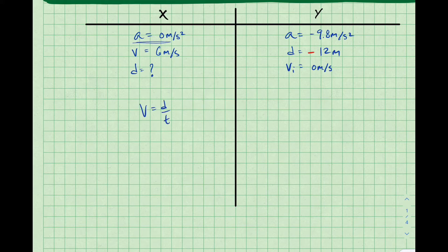In the x direction, the only equation that we are going to need is v equals d over t because of that acceleration being equal to zero.